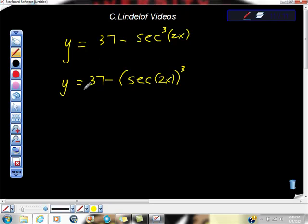I know that the derivative of this 37 is 0, so y prime, the derivative of that is 0. And I'm going to do the derivative of the outside, and the outside function to me looks like this. It's this negative piece right here and this.